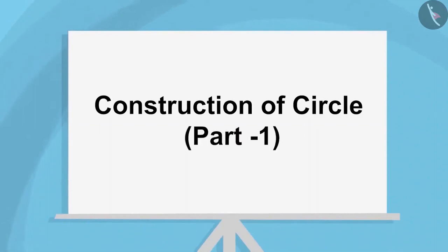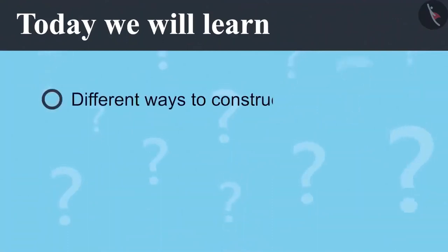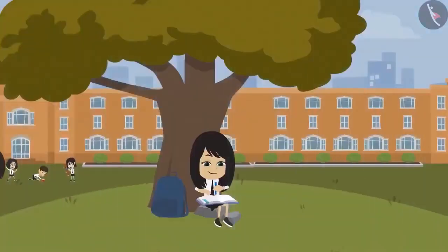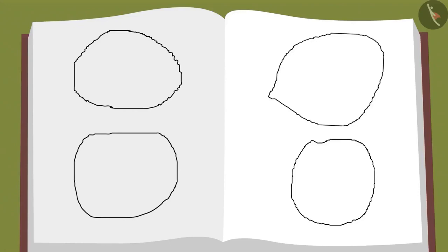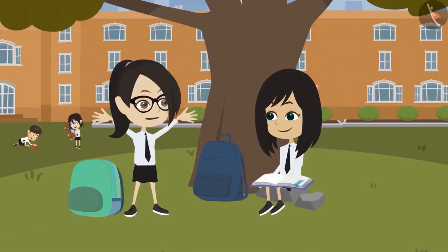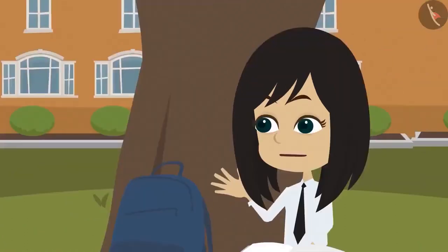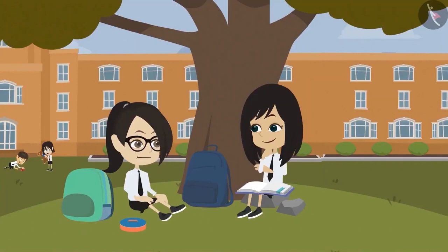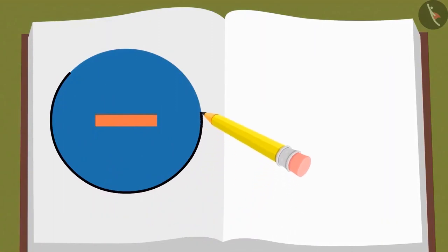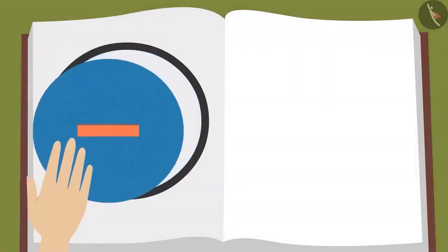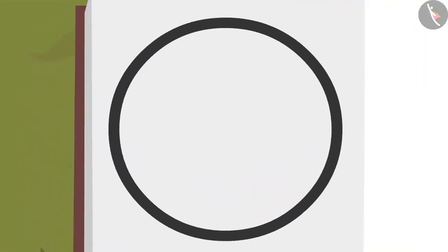Construction of Circle, Part 1. Today we will learn different ways to construct a circle. What are you making? I am trying to make a round figure but I am just not able to. Your method is wrong — let me show you the right way. Why have you taken out this tiffin box? What is the shape of this tiffin box? It is round. Now I will keep this on a paper and trace its boundary with a pencil. Now let us lift the tiffin box — look, a round figure is created.